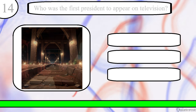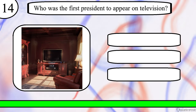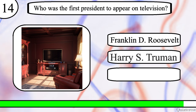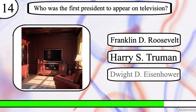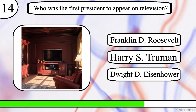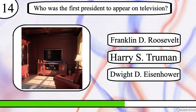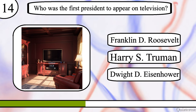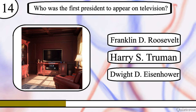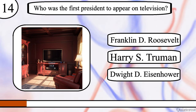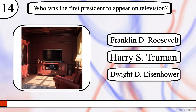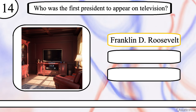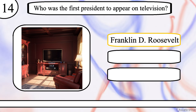Question 14. Who was the first President to appear on television? Franklin D. Roosevelt, Harry S. Truman or Dwight D. Eisenhower? The correct answer is Franklin D. Roosevelt.